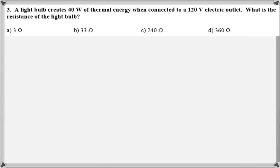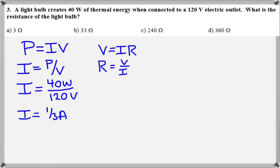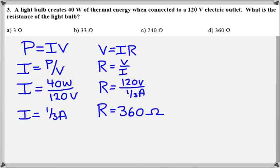In question number three, we're told that a certain light bulb creates 40 watts of thermal energy when connected to a 120-volt electrical outlet, and we're looking for the resistance of the light bulb. Since P equals I times V, I can calculate the current by dividing power by voltage, giving a current of one-third of an ampere. Then using Ohm's law, dividing 120 volts by one-third of an ampere gives a resistance of 360 ohms. We should go with D.